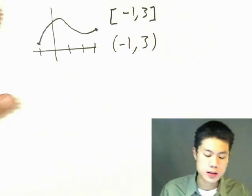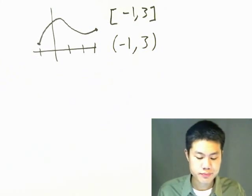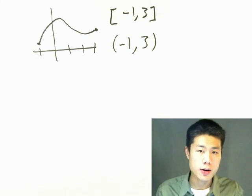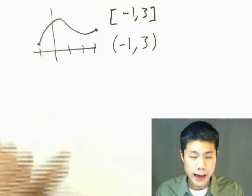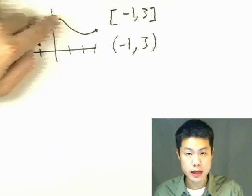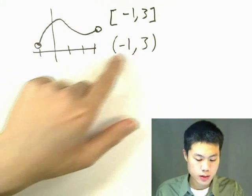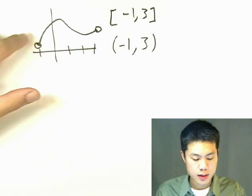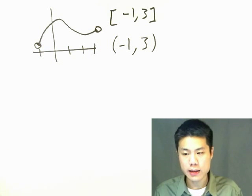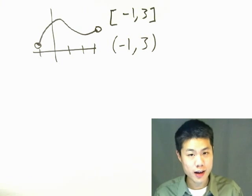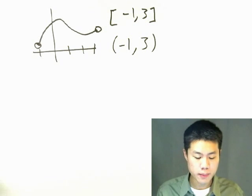But what if I change the question to find the absolute maximum and minimum on the open interval from negative one to three? Then negative one and three are no longer in the domain, so I would not be allowed to say x equals negative one is the absolute minimum. I can still say x equals positive one is the absolute max, but there would be no absolute minimum in this interval. Why? Because we can always get closer to x equals negative one — negative 0.999, negative 0.9999 — so there's no absolute minimum, but there is an absolute maximum.